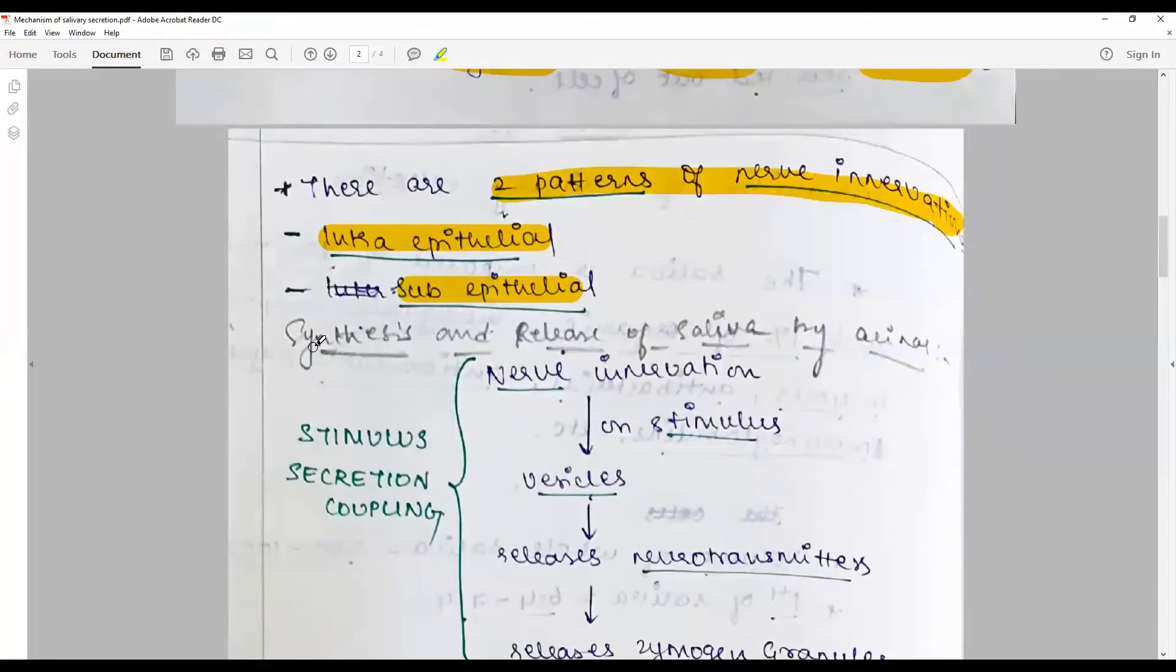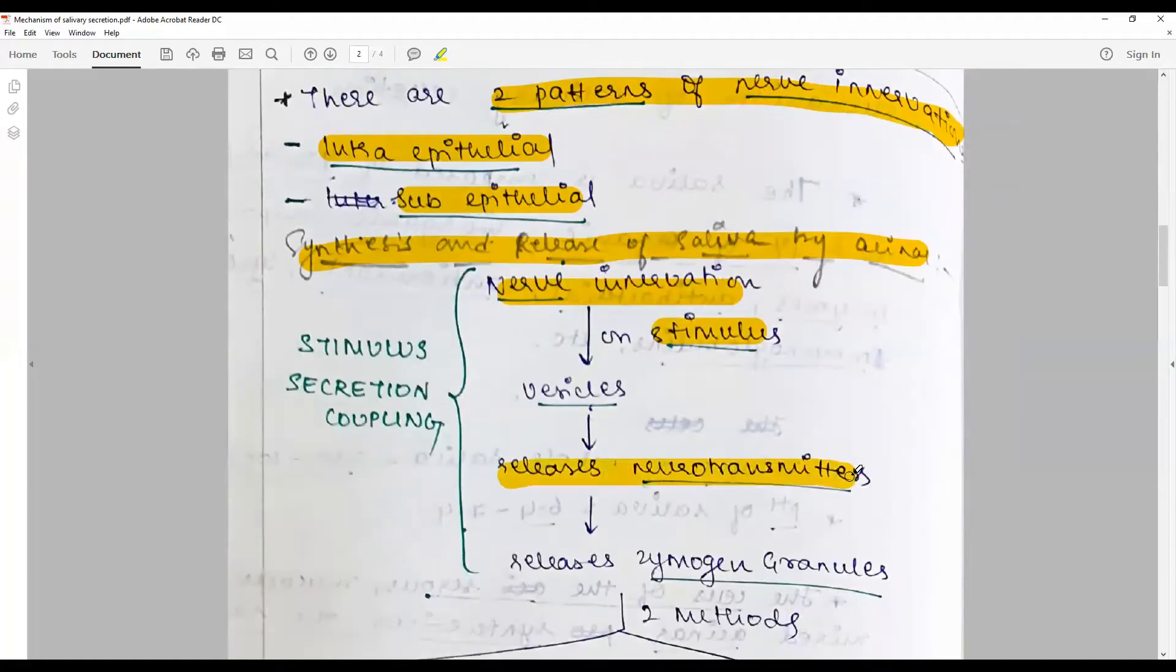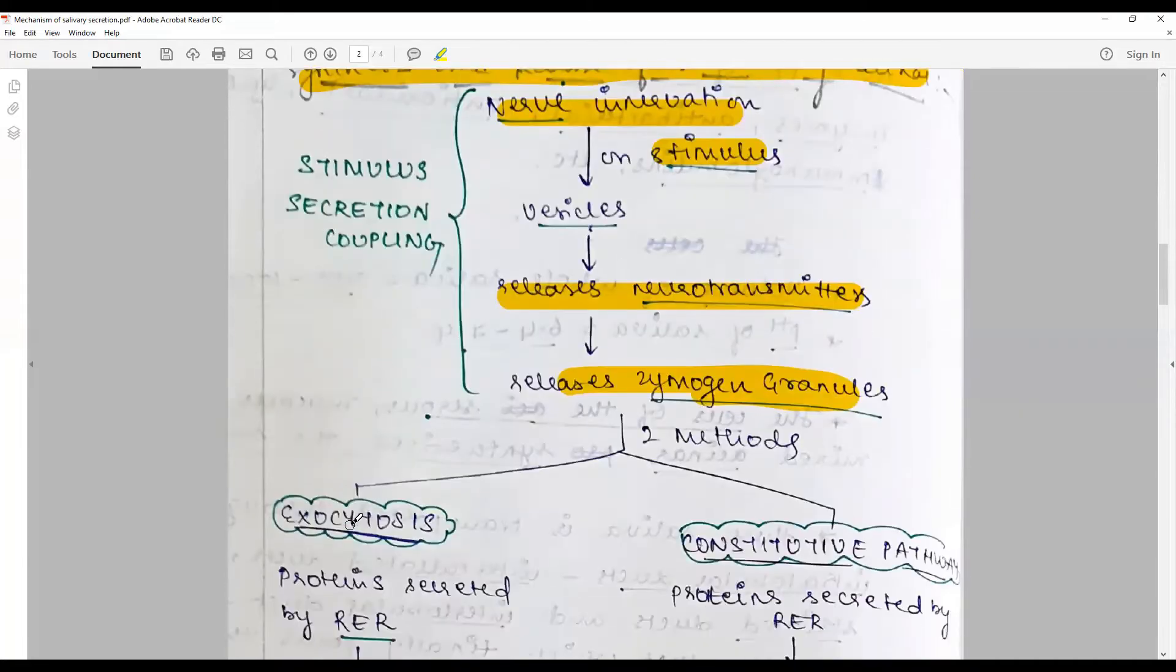The synthesis and release of saliva by acinus is the first step. The nerve innervation may be parasympathetic or sympathetic depending on the stimulus, the reflex by the mouth, gastroesophageal, visceral, glossopharyngeal, even the sense of smell can cause nervous stimulation which via the vesicles acts and releases the neurotransmitters. These trigger the release of zymogen granules by two methods: either by exocytosis or constitutive pathway.